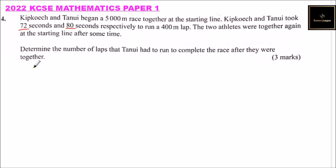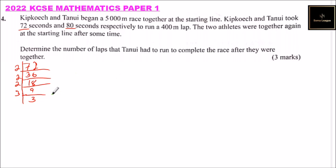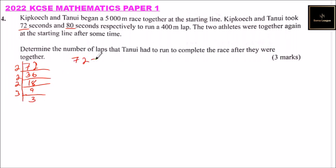To get that, we get the factors of 72. You can get the factors using this division method, or you can use the other method. I am going to use this method. So we have 72 is equal to 2 × 2 × 2 × 3 × 3.